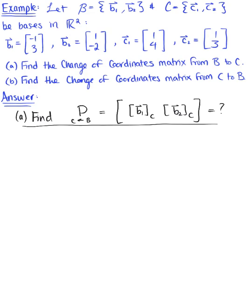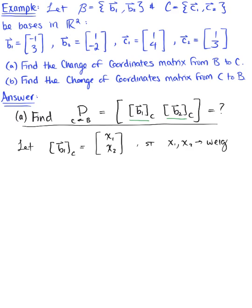To get started, let's define the coordinate vectors relative to basis C. We'll let the coordinates of vector B₁ relative to basis C be the column vector (x₁, x₂), where x₁ and x₂ are the scalar weights. We'll do the same for the coordinates of vector B₂ relative to basis C, using weights (y₁, y₂).